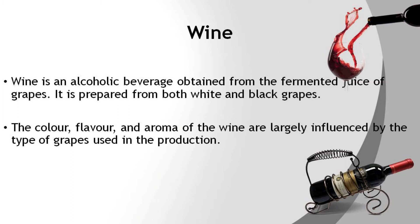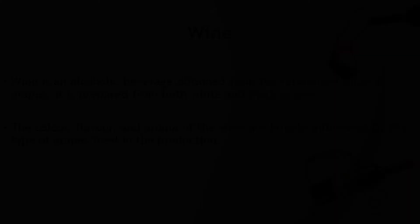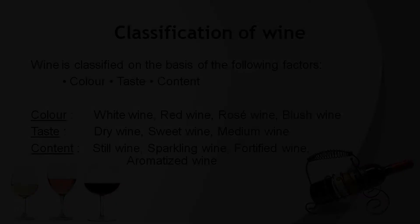The colour, flavour and aroma of the wine are largely influenced by the type of grape variety used in the production. Wine is classified on the basis of its colour, its taste and its contents. According to the colour, wine is classified as white wine, red wine, rosé wine, and blush wines.